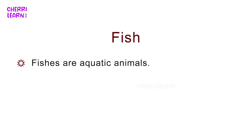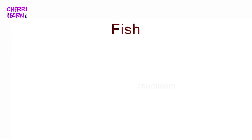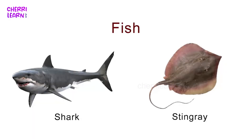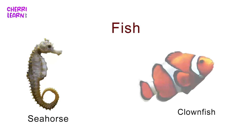Fish. Fishes are aquatic animals. They have gills, scales and swim bladders to float. Examples include Shark, Stingray, Seahorse, and Clownfish.